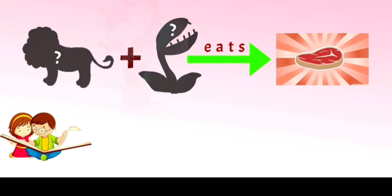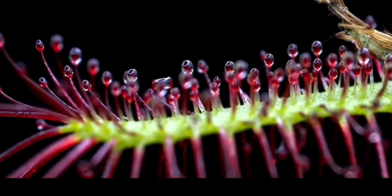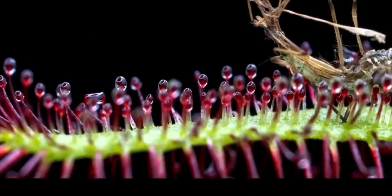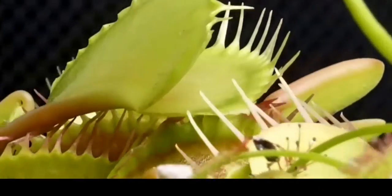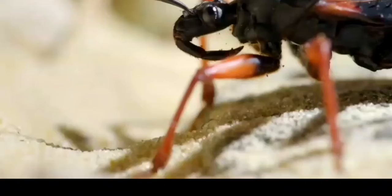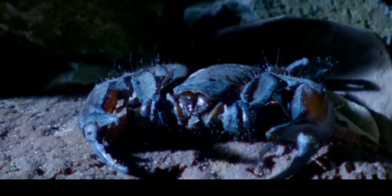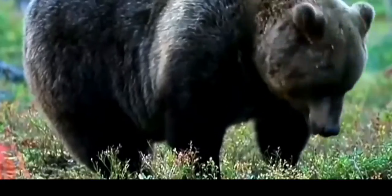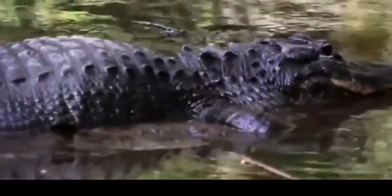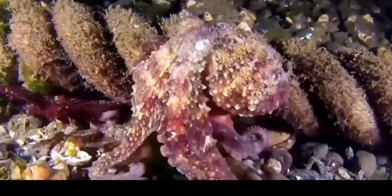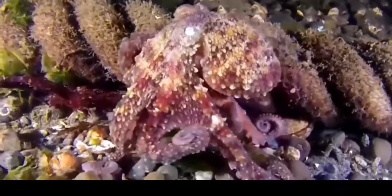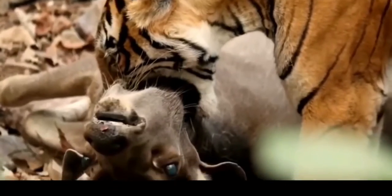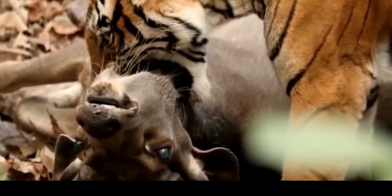A carnivore is simply any species that eats meat, and this can range from carnivorous plants and insects to what we simply think of when we hear the word carnivore, like tigers or wolves. Look at that tiger eating the flesh of a deer — amazing, right!